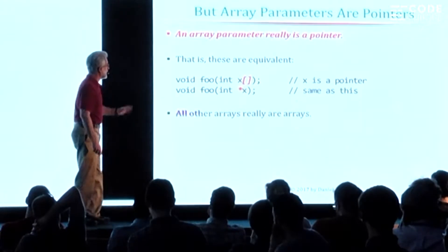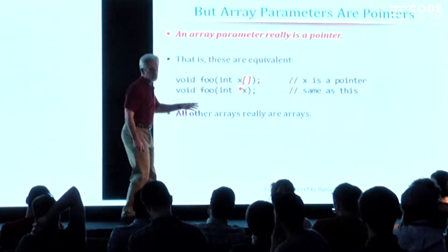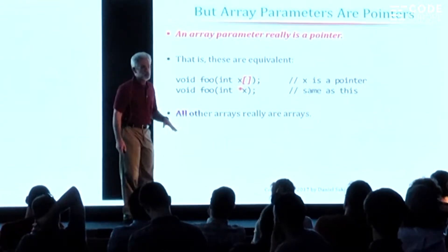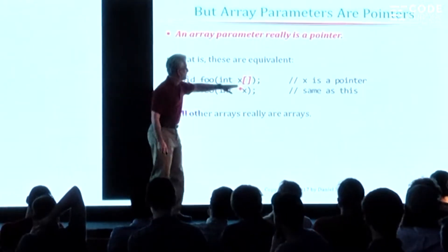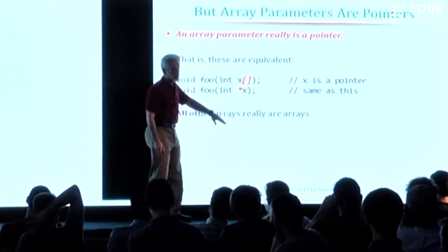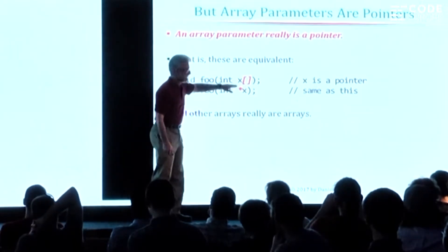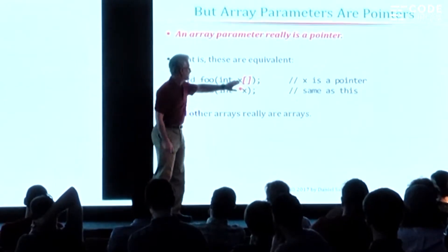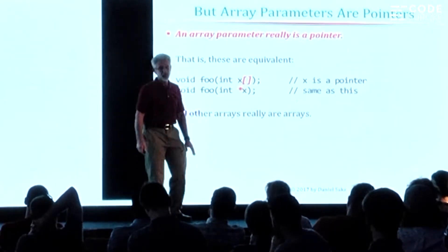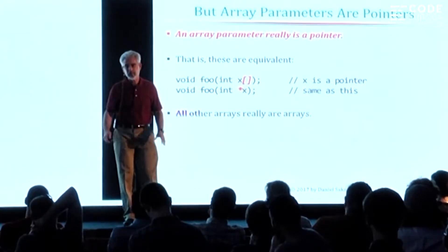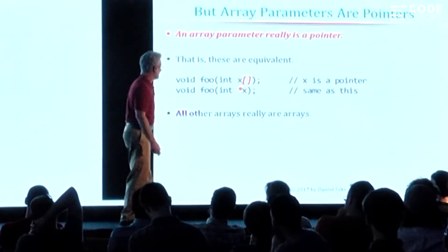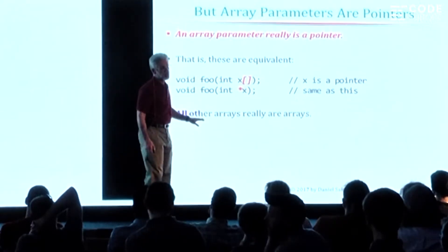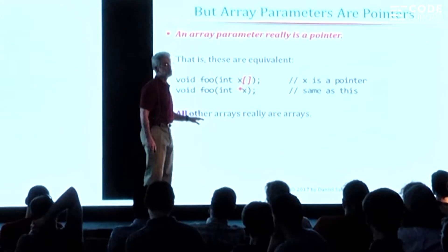Just to add to the confusion: array parameters really are pointers. When you declare a function with a parameter whose type is 'array of', that is not an array — that really is a pointer. This is just two different notations for declaring a pointer parameter. But aside from this, all other arrays in C and C++ really are arrays.